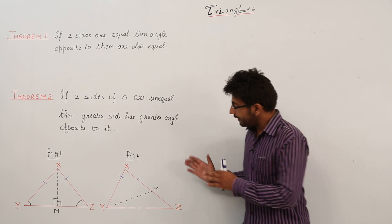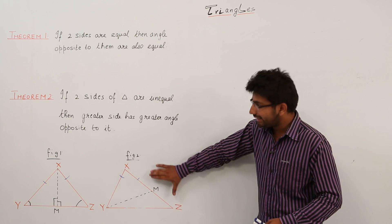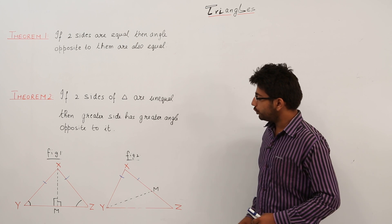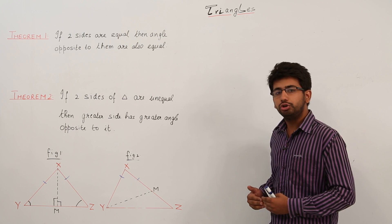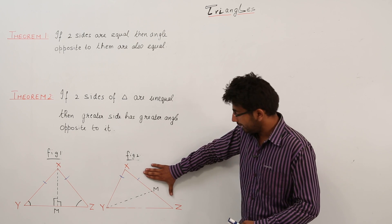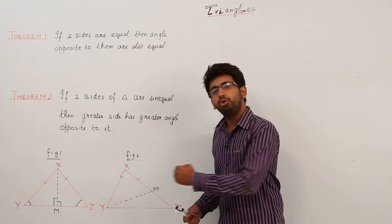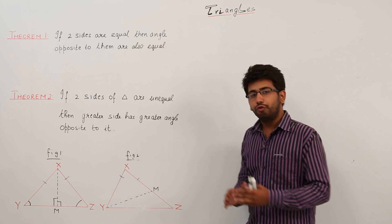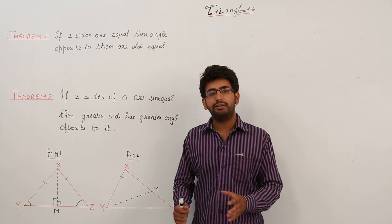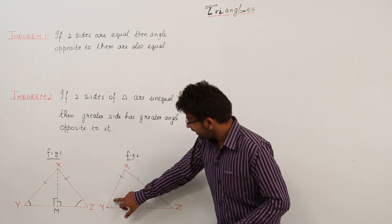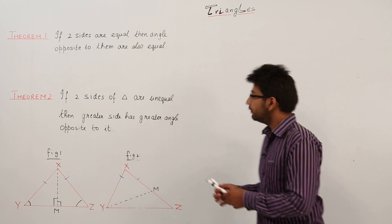In figure 2, it is very clear that XY is a smaller side and XZ is a greater side. So according to the theorem, the angle opposite to the greater side is greater than the angle opposite to the shorter side. The angle opposite to XZ, that means the complete angle Y, should be greater than the angle opposite to the shorter side, angle Z. We have to prove that angle Y is greater than angle Z, and for this we have done a construction — we have drawn a line segment YM such that XM is equal to XY.